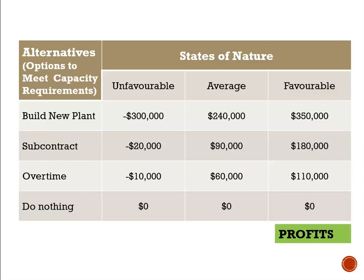Looking at another payoff table — this one is a profit payoff table. The alternatives are to meet the capacity requirements for a company. Four decision alternatives: build a new plant, subcontract, do overtime, or do nothing.